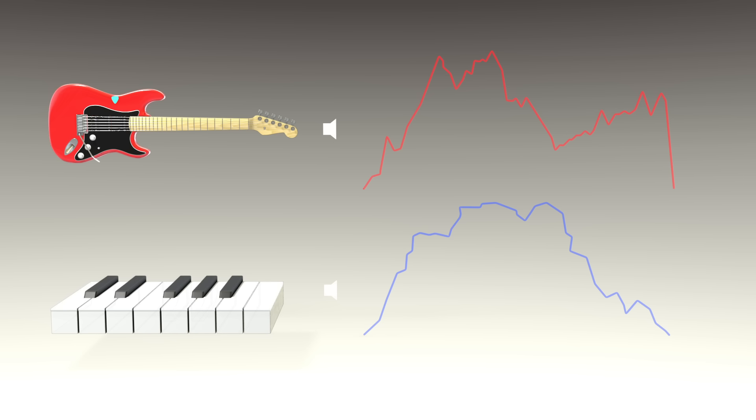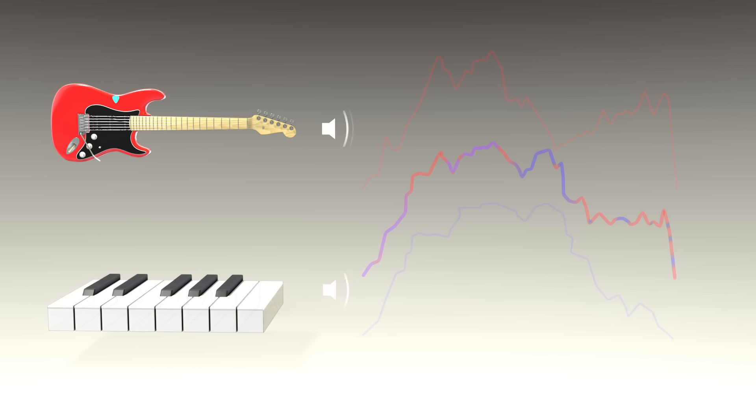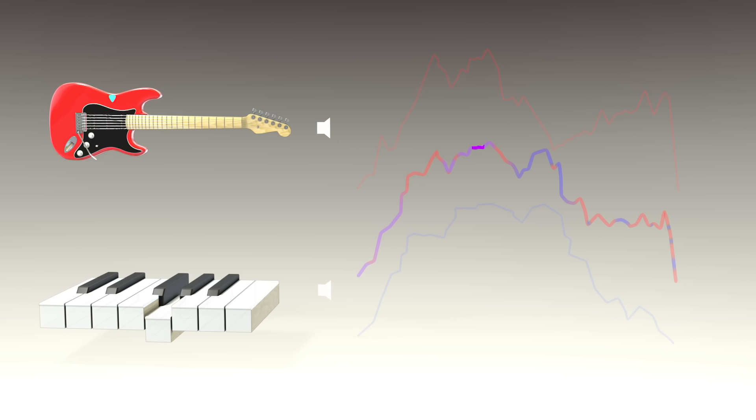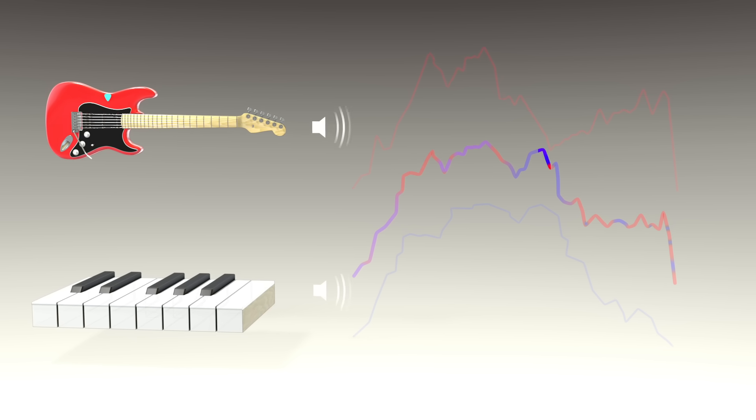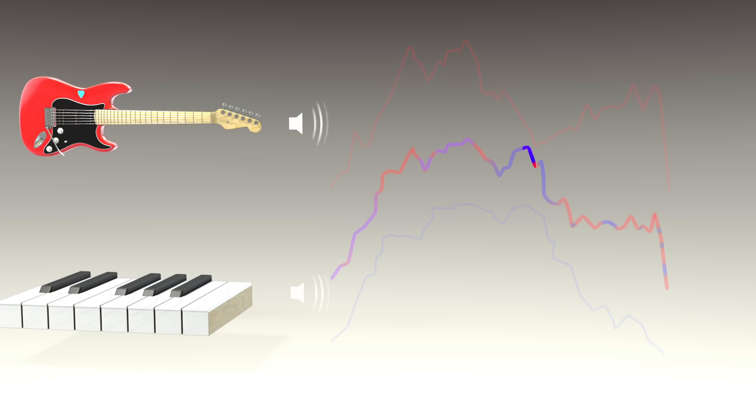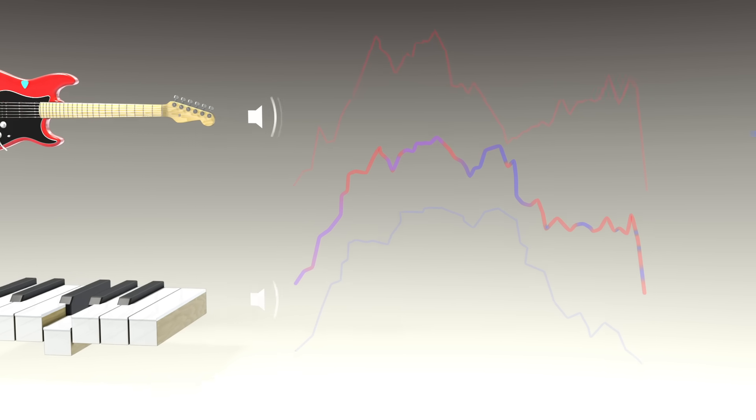When two or more instruments are played together, the unique sound waves combine into one, even more complex, unified wave. Matching frequencies from each instrument merge, becoming louder but indecipherable from the other. However, many unique frequencies from each instrument's distinct timbre remain intact and undisturbed. With a little effort, our ears can still pick out these individual instruments from the mix.